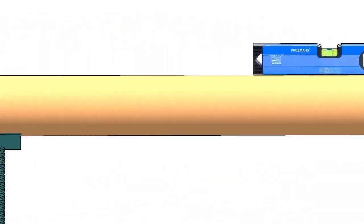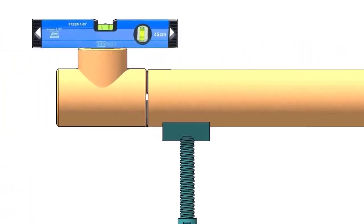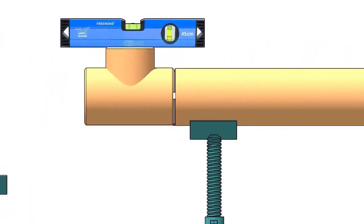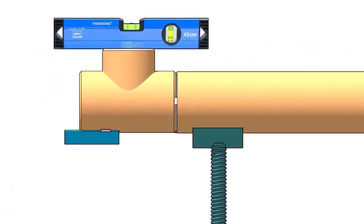Mark the center lines of the tee and the elbow. Tack weld the piece of angle below the tee if you don't have a ready-made pipe clamp.